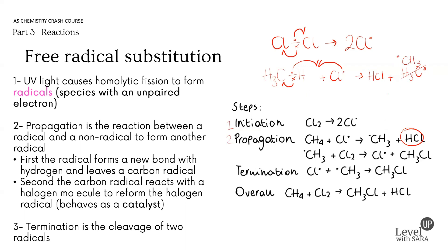The second propagation step: the carbon radical reacts with a halogen molecule to reform the halogen radical. It behaves as a catalyst because it's used up in the first step but reformed in the second step — that's the definition of a catalyst. The carbon radical in this mechanism is called an intermediate because it's formed and then reacts straight after.